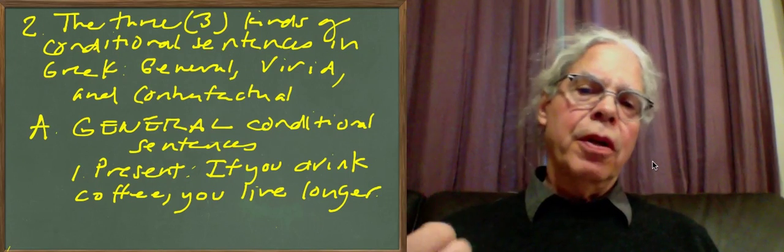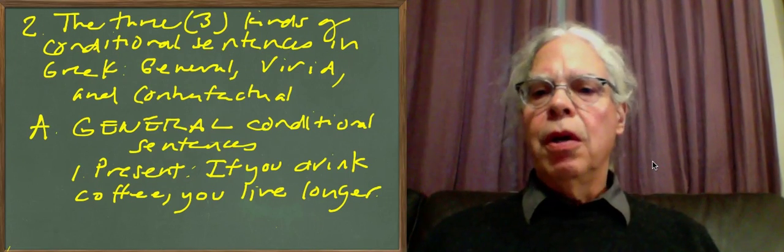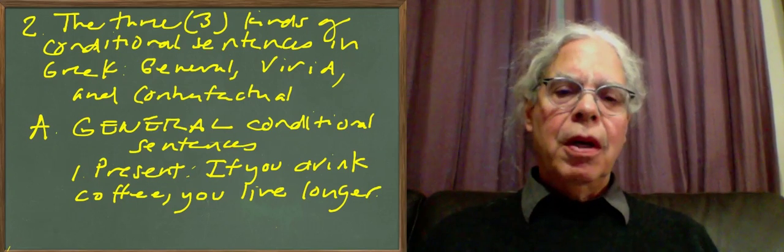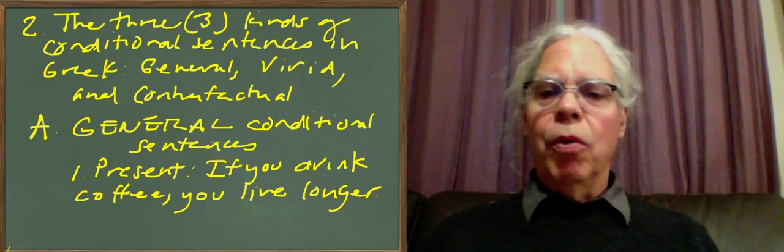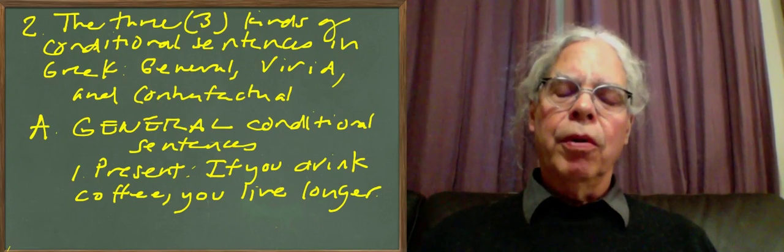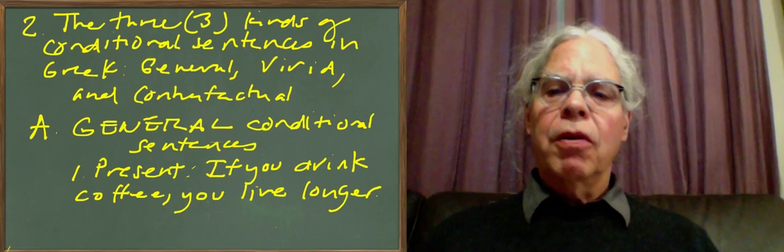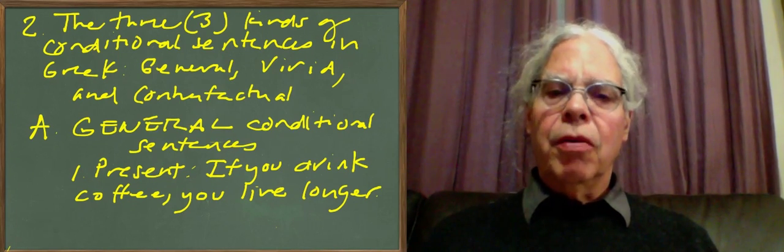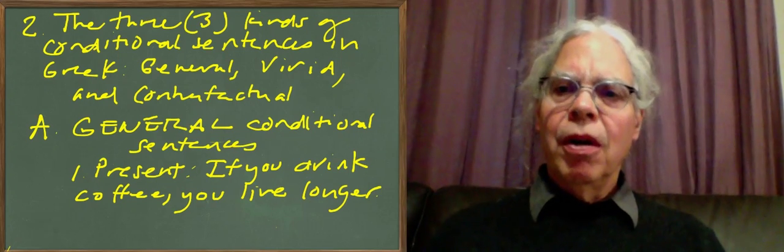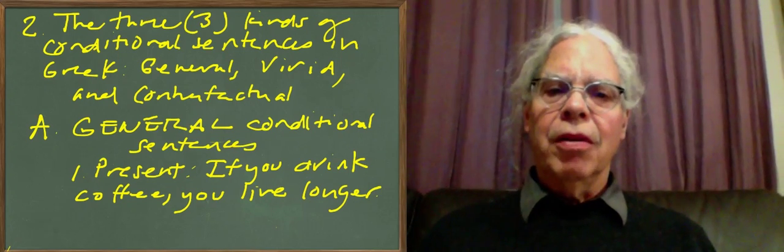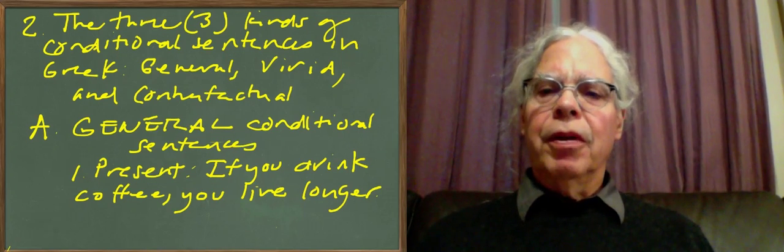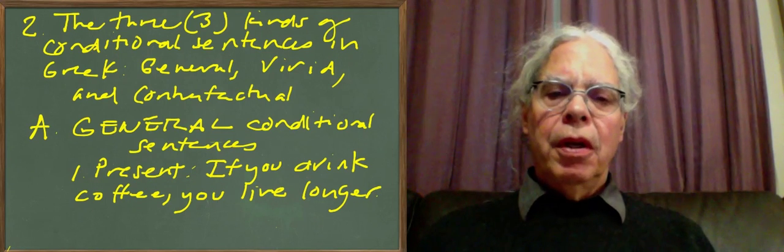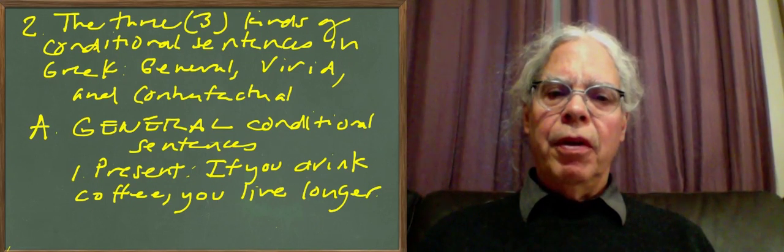So there are three kinds. There are general conditions in which you're trying to state a general proof about the way the world works. There are vivid conditions in which some are more and some are less real about the world. And then there are contrafactual conditions, which are when you're making admittedly false or incorrect hypotheses about the world, which is something that we also do in order to understand things that are going on.